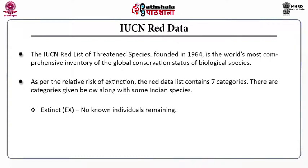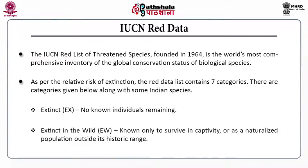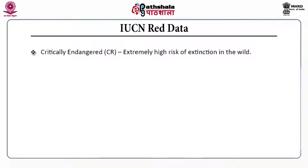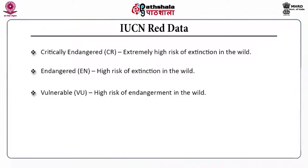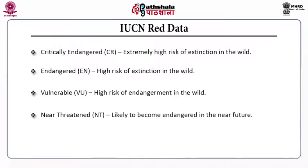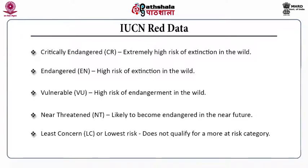The seven IUCN red list categories are: first, Extinct — no known individuals remaining; second, Extinct in the Wild — known only to survive in captivity or as a naturalized population outside its historic range; third, Critically Endangered — extremely high risk of extinction in the wild; fourth, Endangered — high risk of extinction in the wild; fifth, Vulnerable — high risk of endangerment in the wild; sixth, Near Threatened — will become endangered in the nearby future; and seventh, Least Concern (LC) — lowest risk, does not qualify for a more at-risk category.